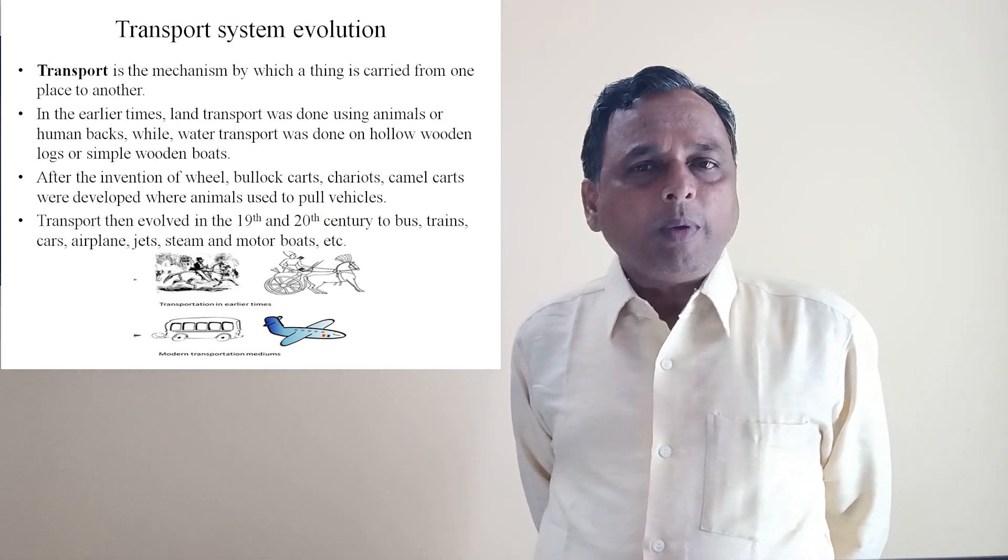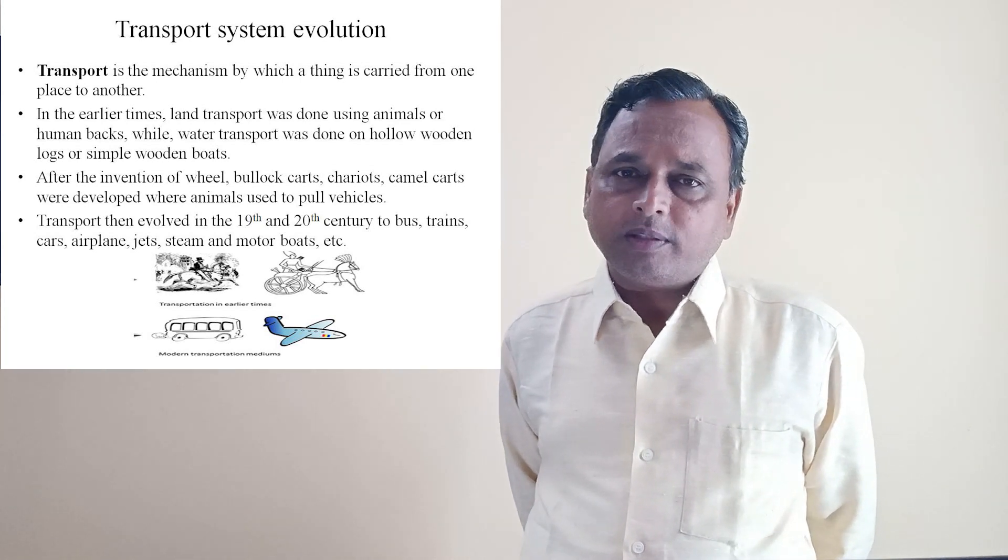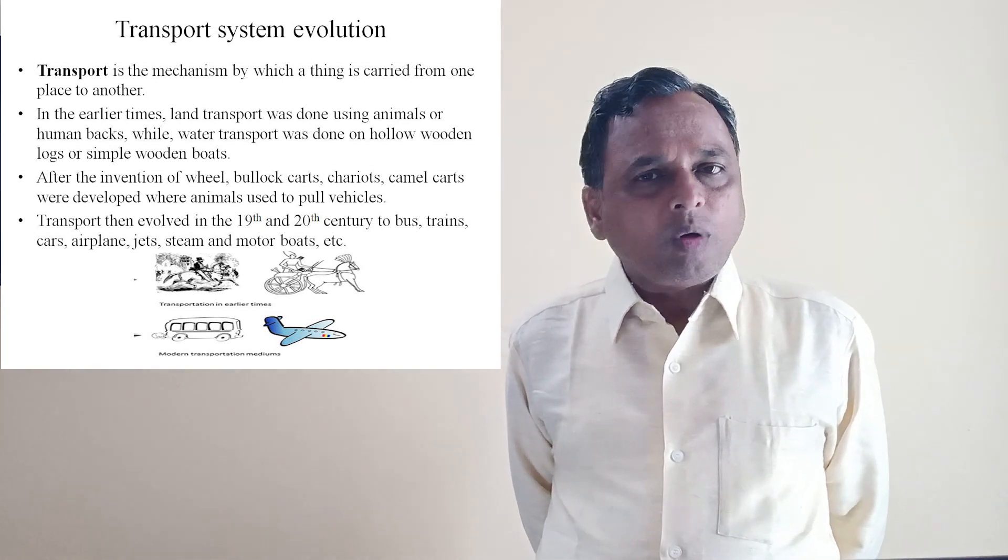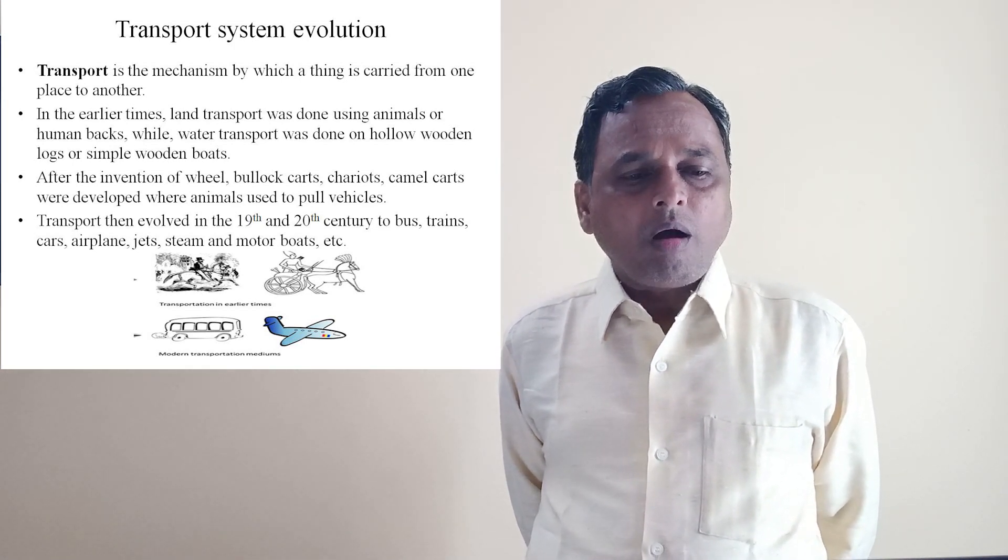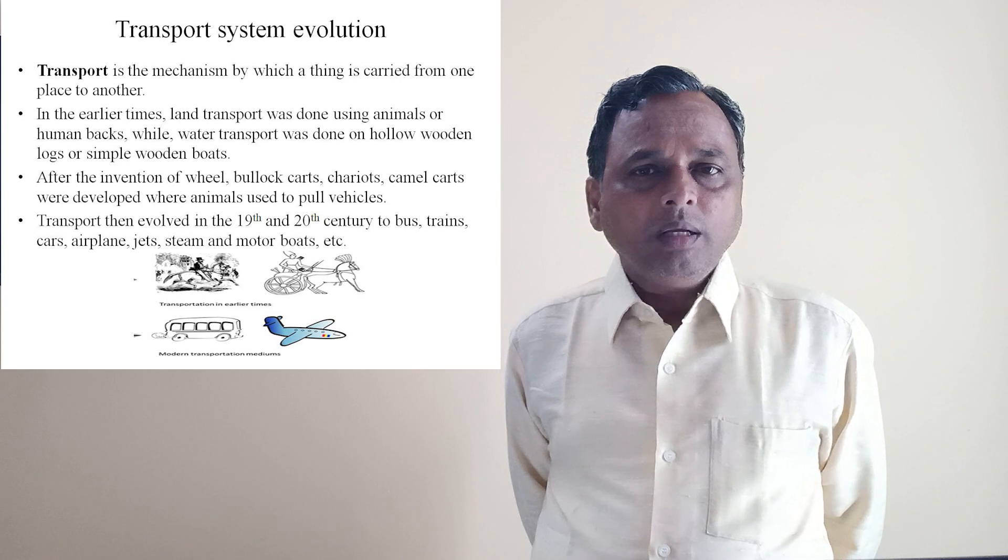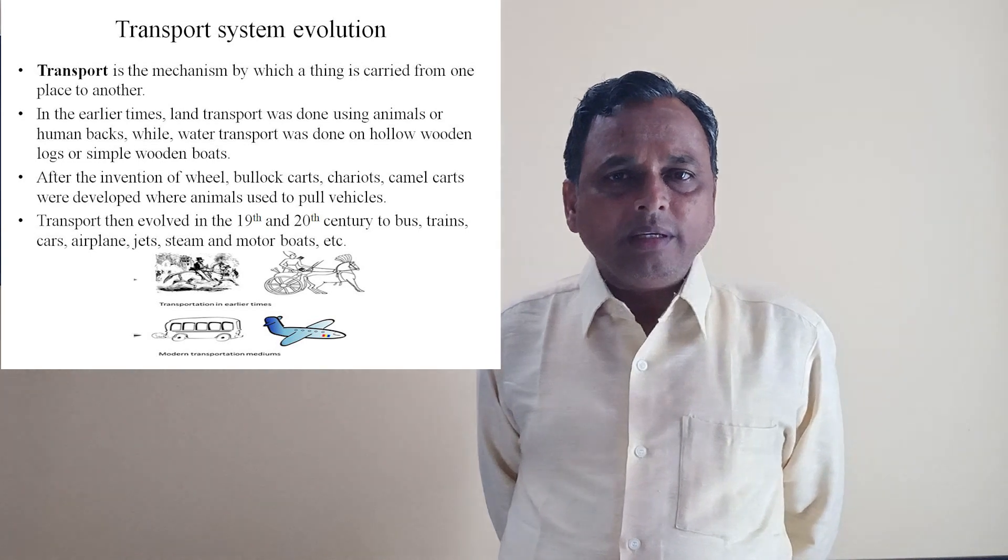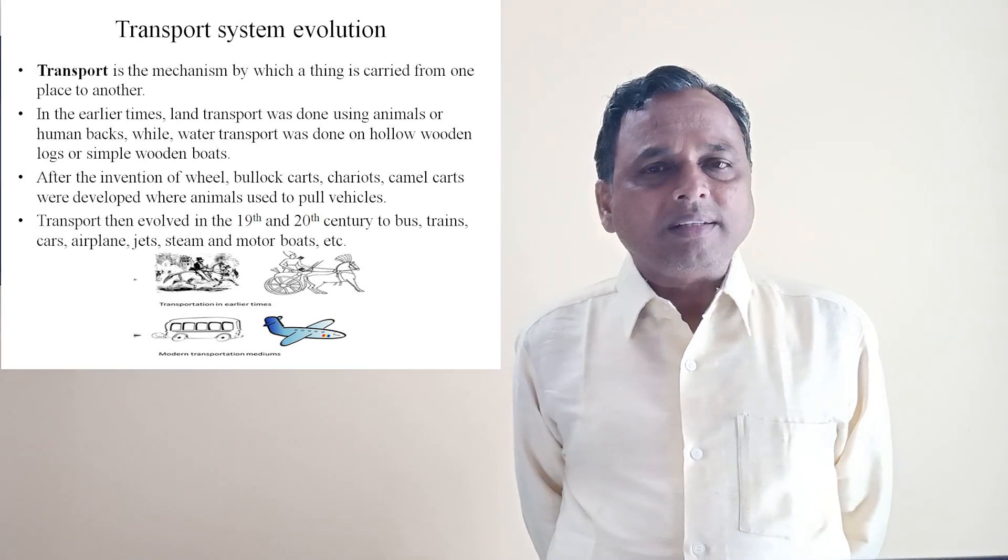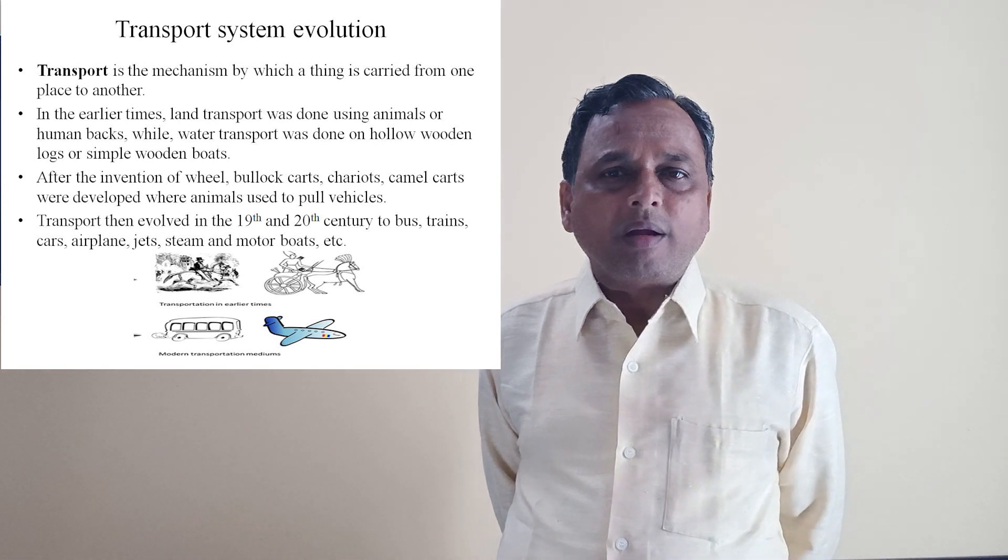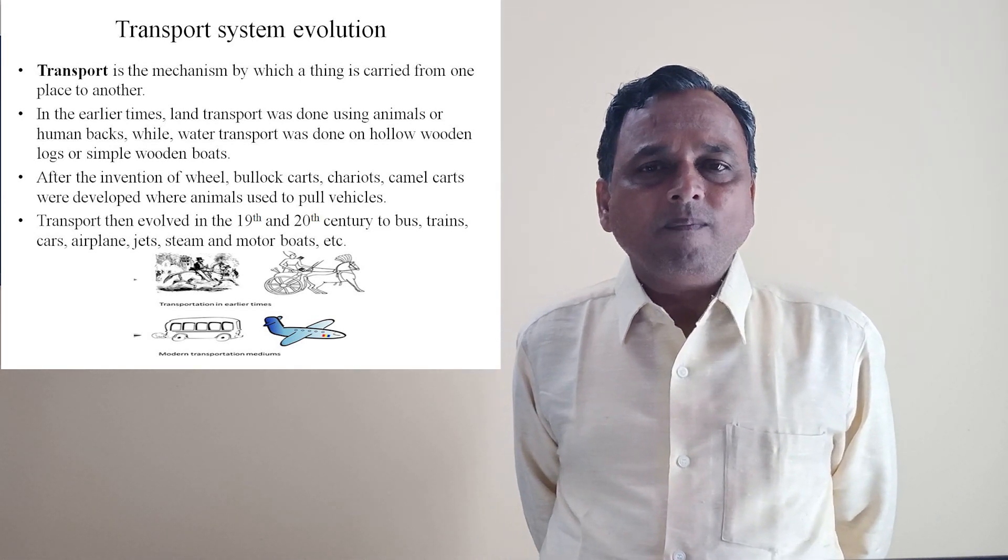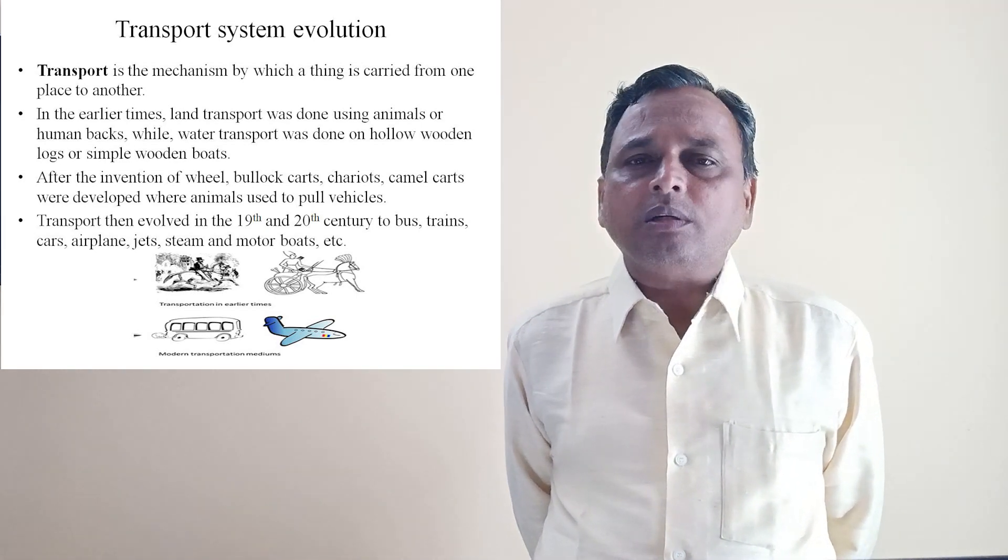How the people used to move from one place to another place - they used only on foot, then they used bullock carts, then gradually in the later years the invention of wheel, then automatically one by one, car, bus, train, flight - all other services of transport system came into existence.